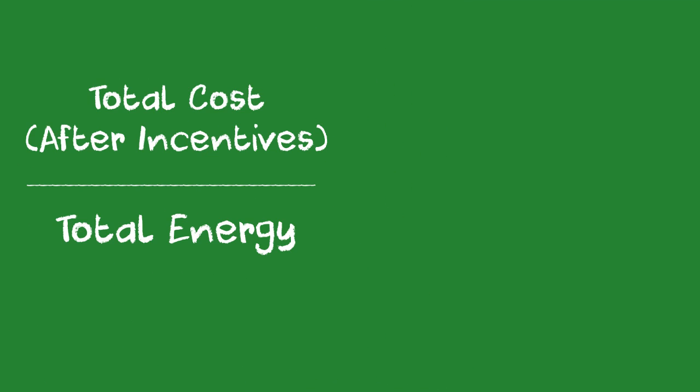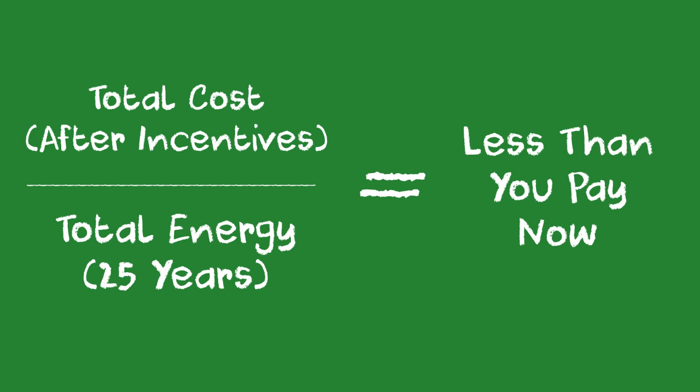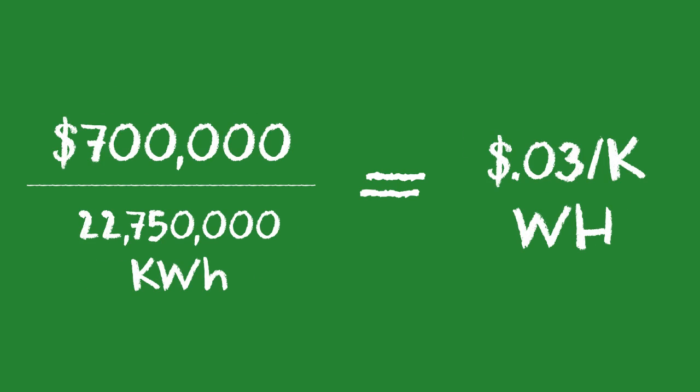If you divide the energy produced by the total cost of installation, you will see that your cost per unit of energy will be less than you currently pay.